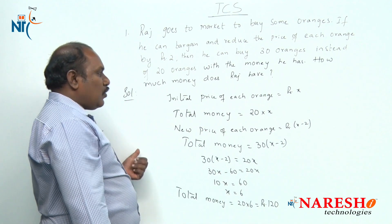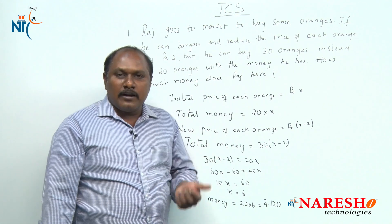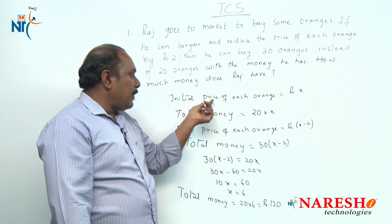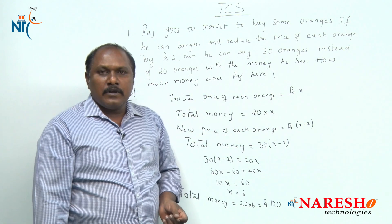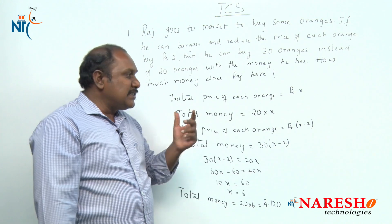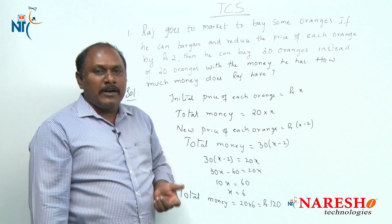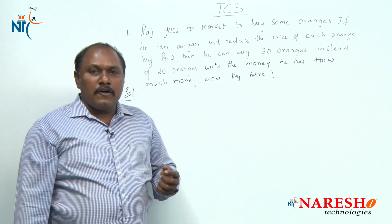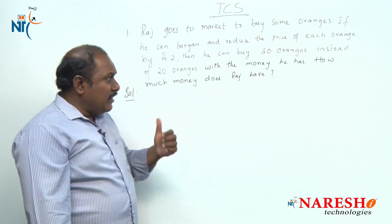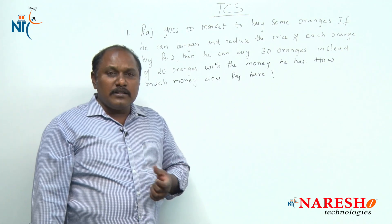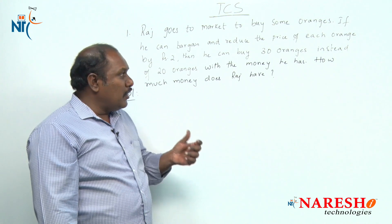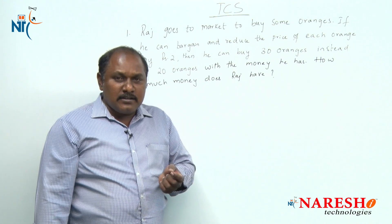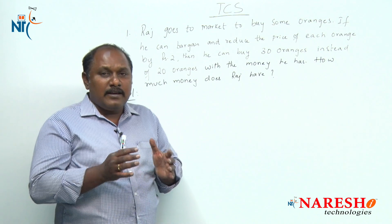This is one way to solve this particular question, where we assigned the variable to the price of each orange. Now let us look into the second method of solving this problem. In the first method we assumed the variable x for the price of each orange. Now let us assume x for the total money Raj has.